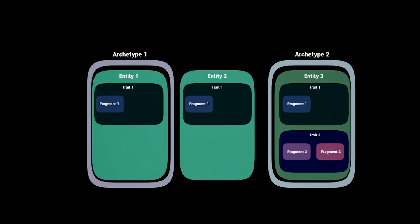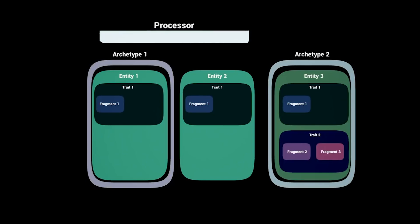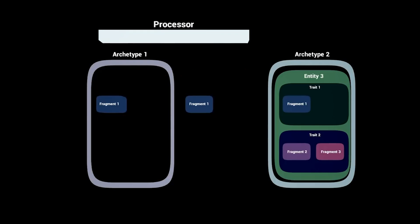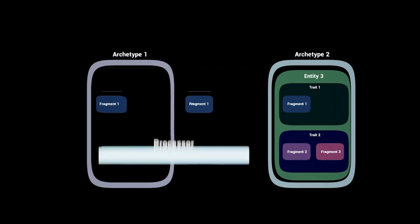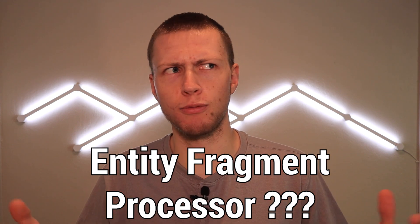Then there are some things named completely differently for seemingly no reason. Instead of Components, they're called Fragments — the little bits of data that store the data values associated with particular entities. Instead of Systems, these are called Processors. So rather than a system that iterates across a bunch of components, we have processors that iterate across fragments. ECS stands for Entity Component System, but they changed the naming to Entities, Fragments, and Processors — so I guess it's the Entity Fragment Processor.